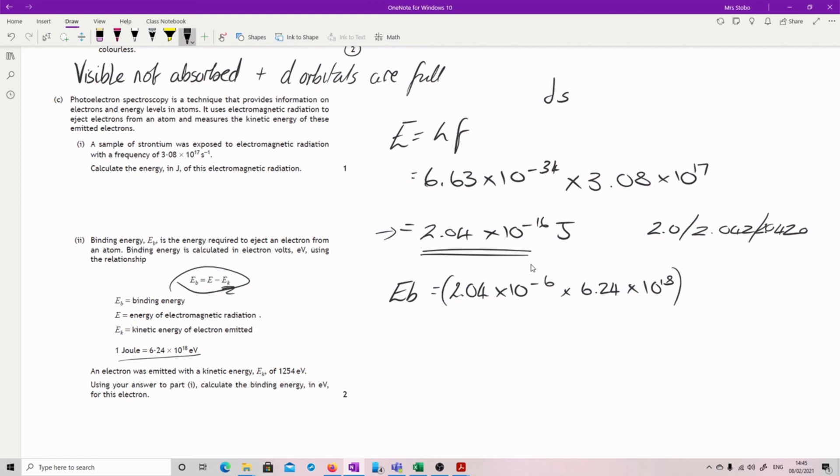And I'm going to take away my 1254. Try to keep it reasonably in the calculator, but just to say what I got when I plugged in the numbers. 0.96 minus my 1254 gave me 18.96 electron volts.